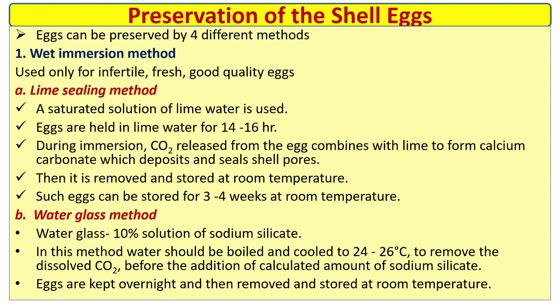Preservation of eggs can be done by four different methods. The first is the wet immersion method, used only for infertile, fresh, good quality eggs. The lime sealing method uses a saturated solution of lime water.